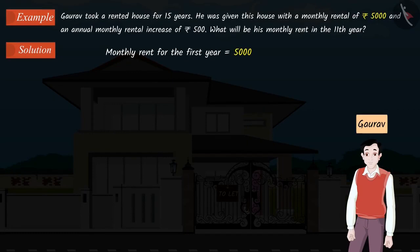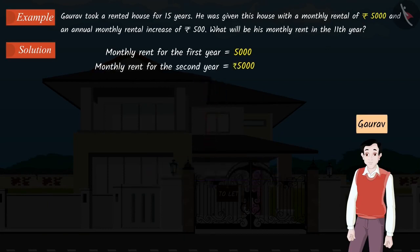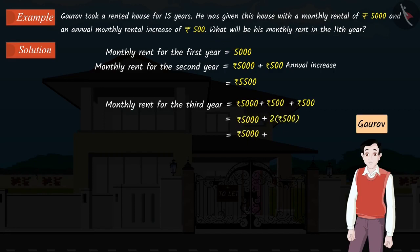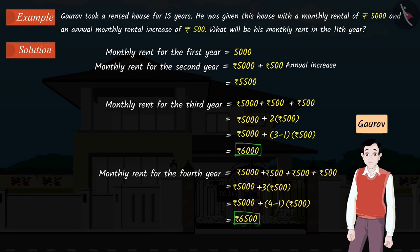The monthly rent for the first year will be Rs. 5,000. We just have to add the annual increase to the monthly rent for the first year. Hence, the monthly rent for the second year will be Rs. 5,500. Similarly, the monthly rent for the third year is found by adding Rs. 500 to the previous year's rent. The monthly rent for the third year will be Rs. 6,000 and the monthly rent for the fourth year will be Rs. 6,500.